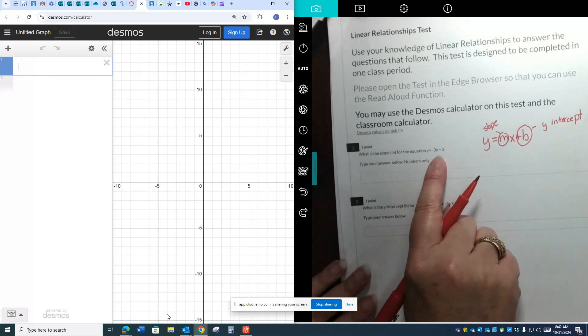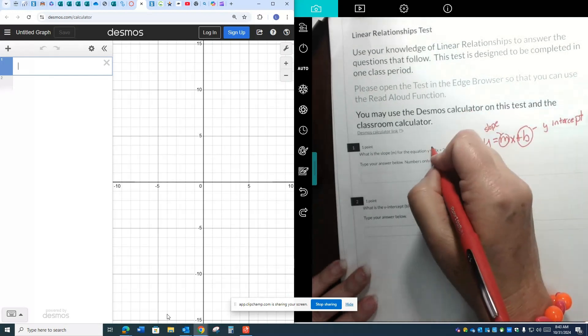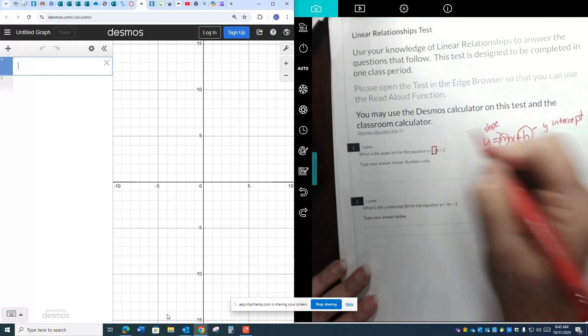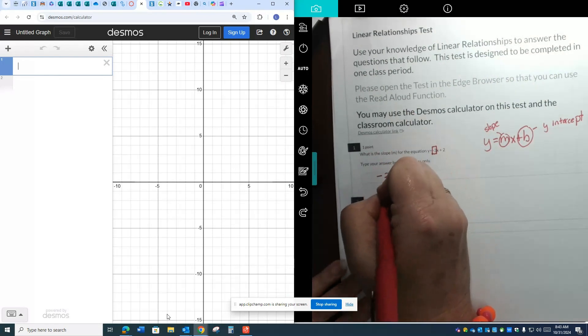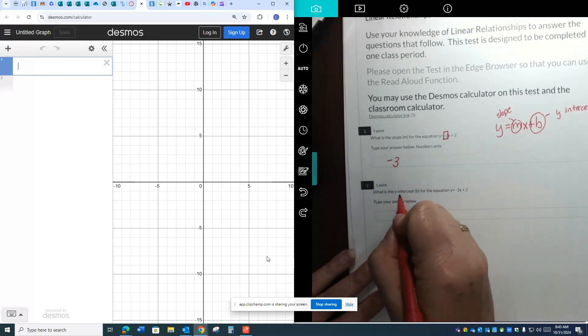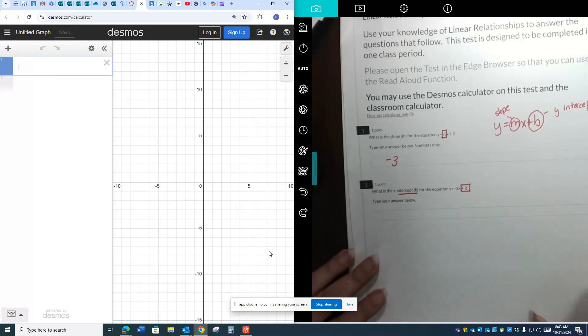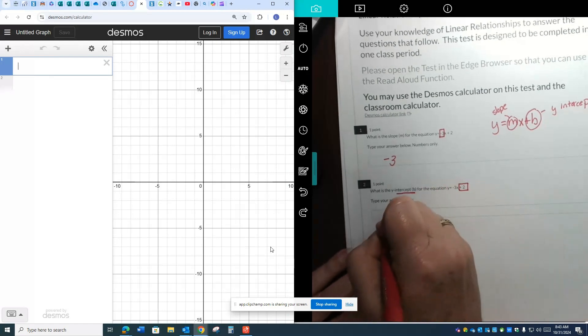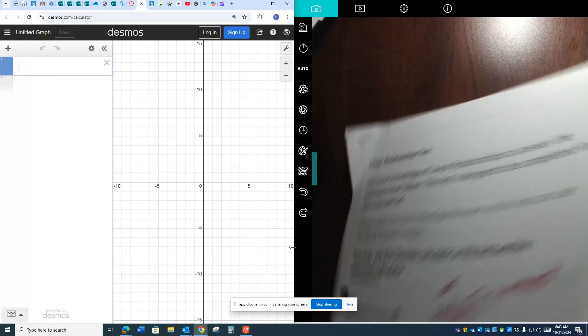So when I look at this equation, all I'm doing is looking for the number that is in front of the x. It's this number right here. That is my slope, my m. That's my answer. And then for this one down here, it's asking me for the b. So that's this number here at the back. I always say b for back. So my answer here is 2.